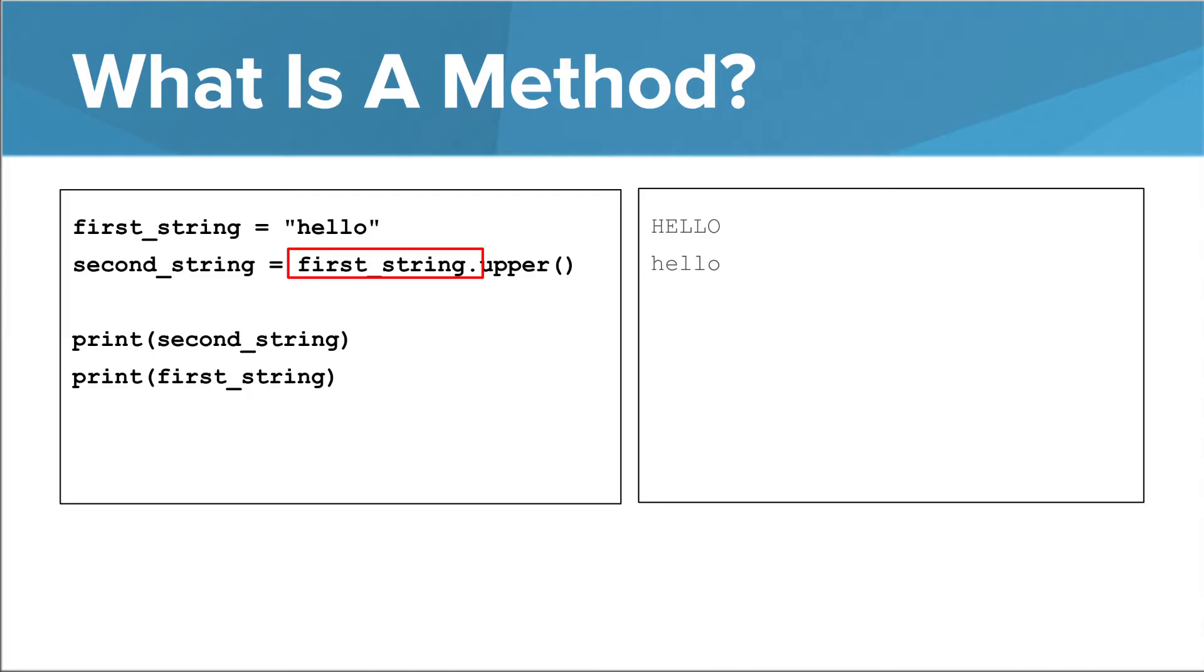In this example, the upper method is able to create a new string that is identical to first_string, except with all capital letters. Upper is a method that you can call on any string.